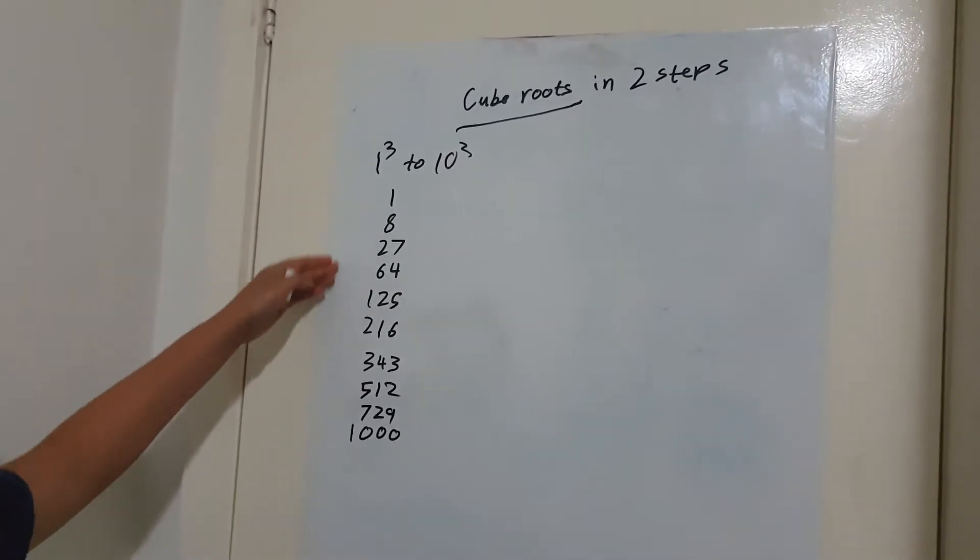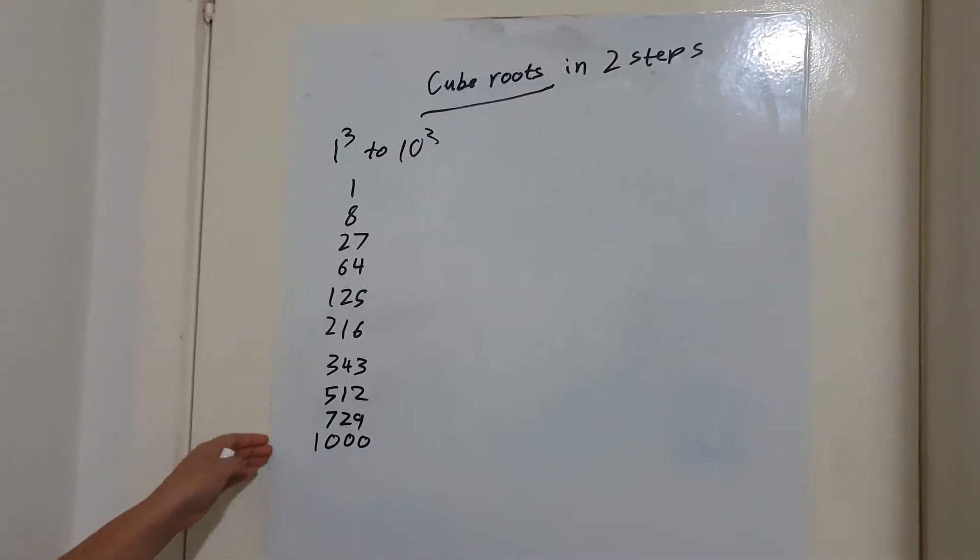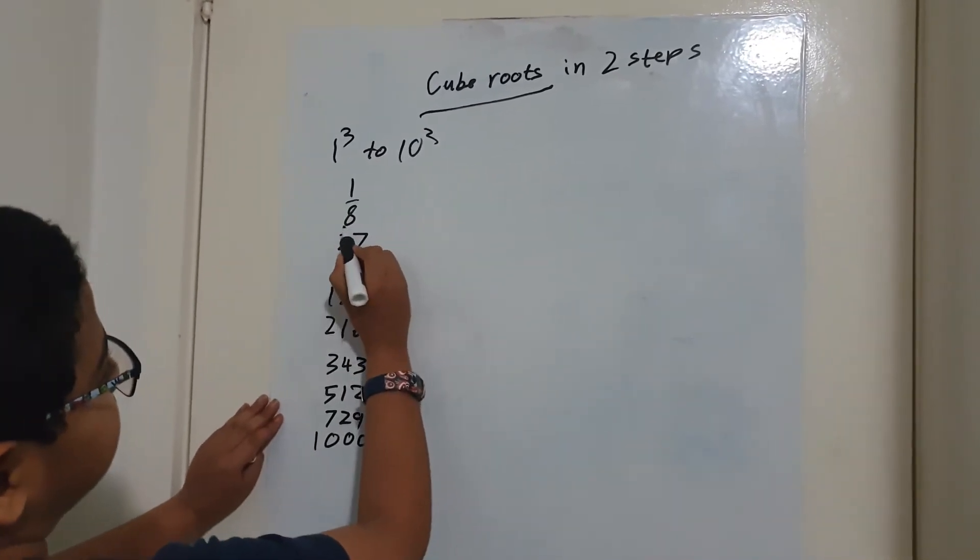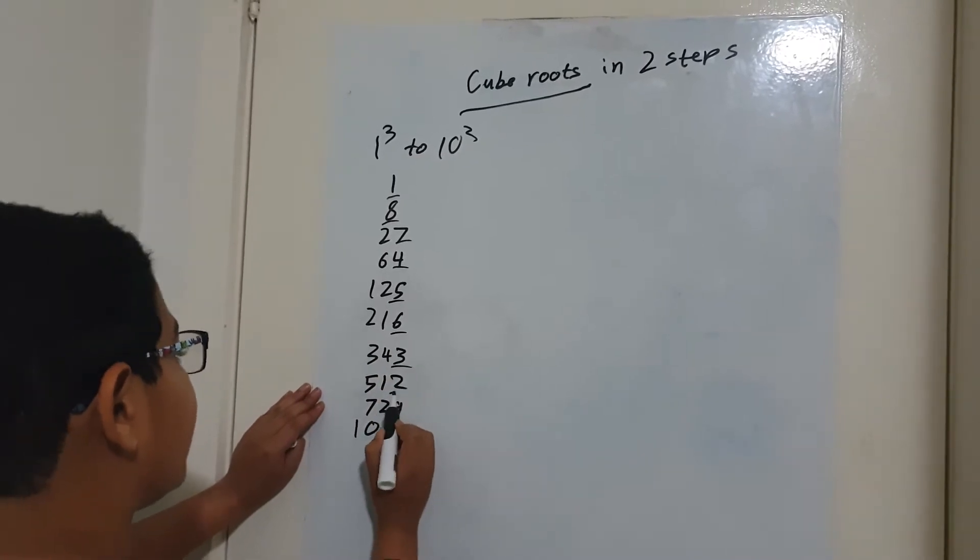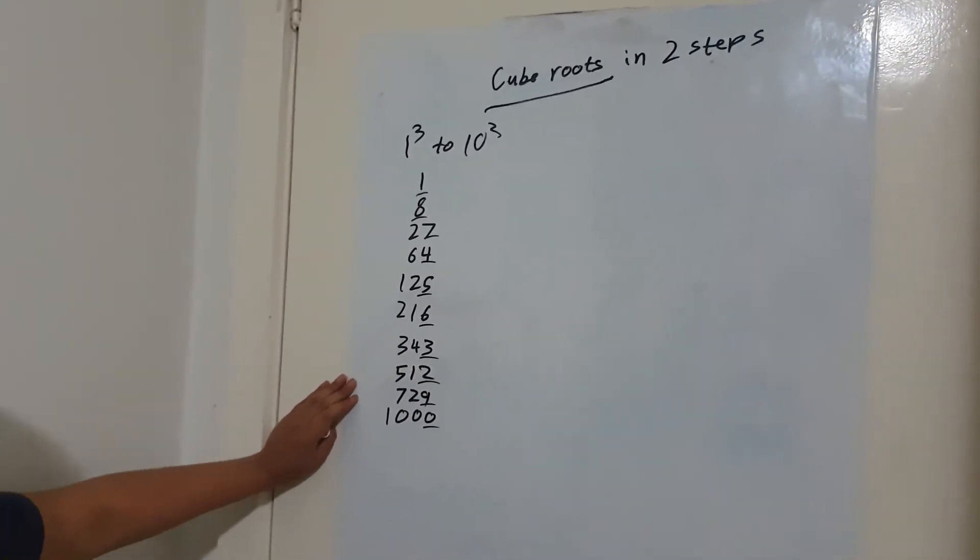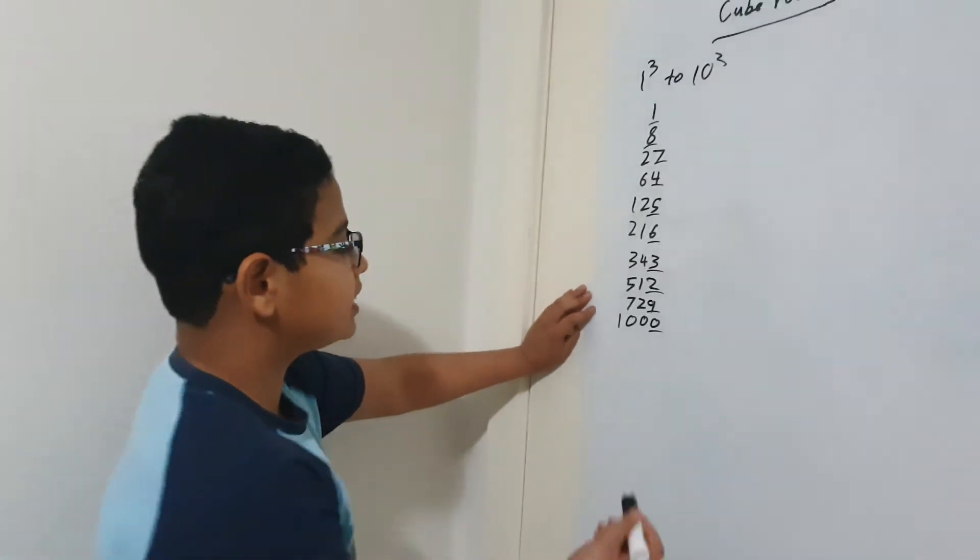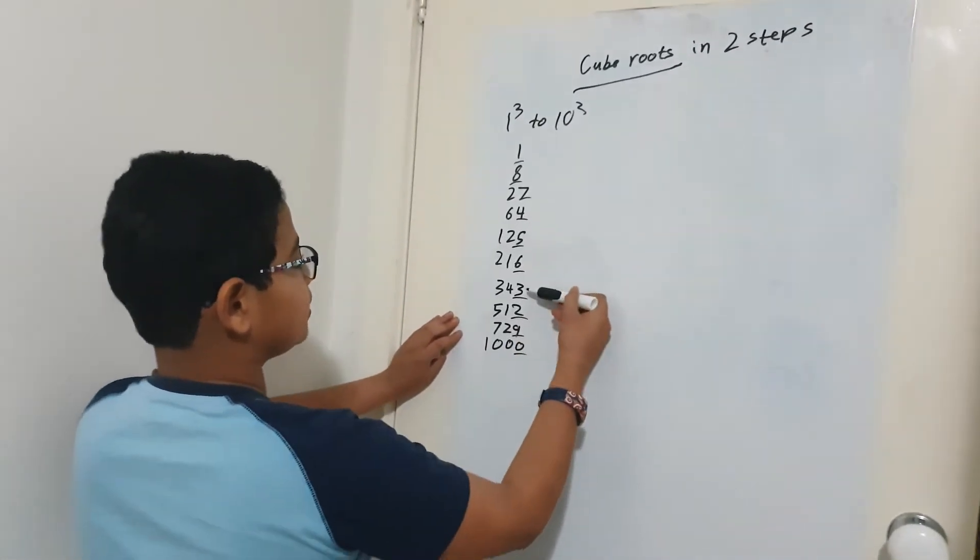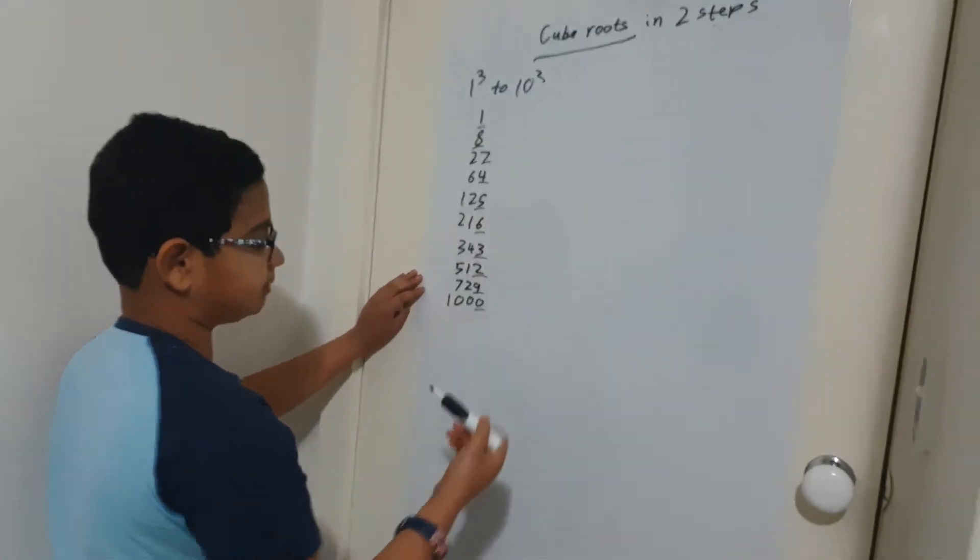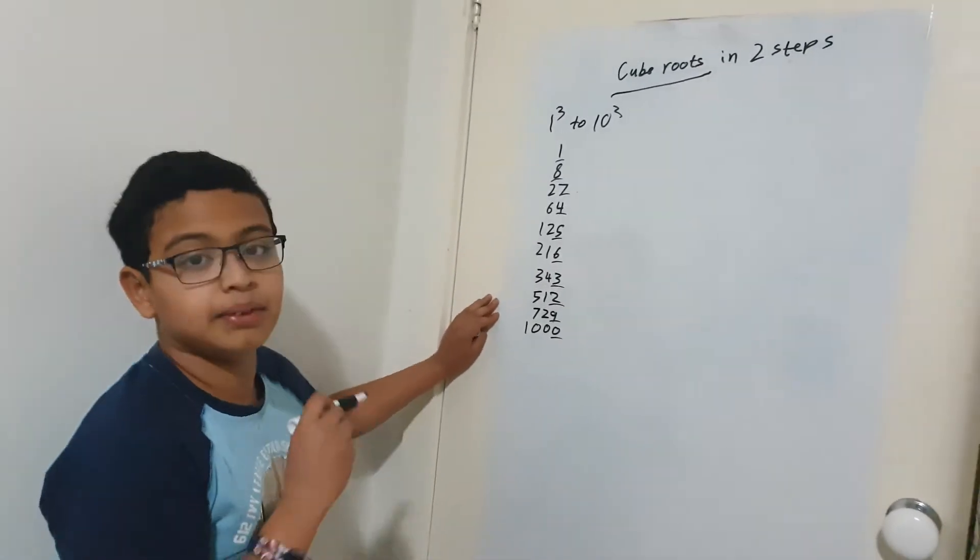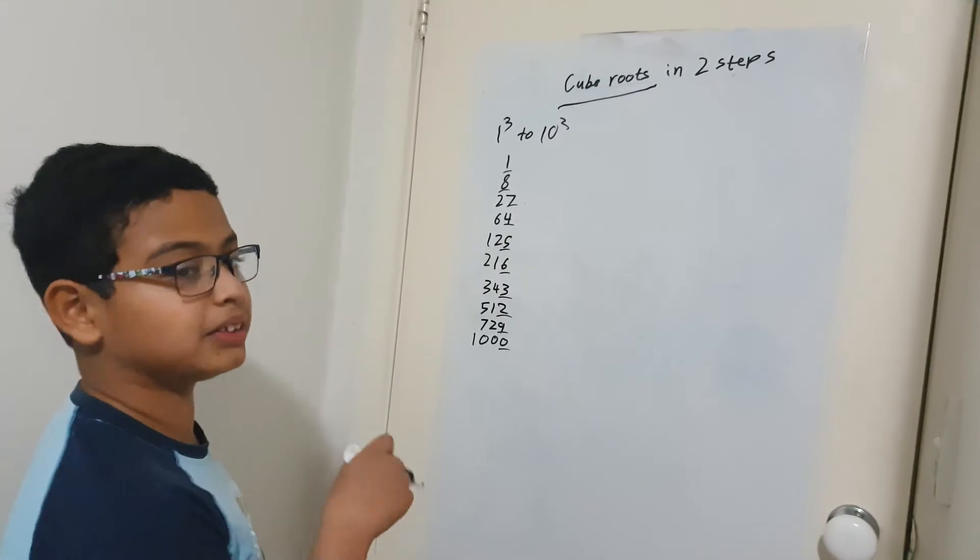So you will need to remember all of those, and also keep in mind the last digit of each of those numbers. And there is kind of like a pattern here, so it covers all the numbers from zero to nine: 0, 1, 2, 3, 4, 5, 6, 7, 8, and 9. And they will be useful in a moment.